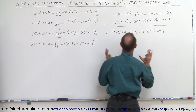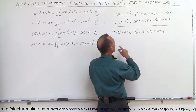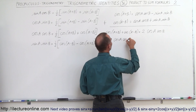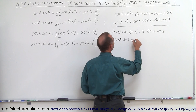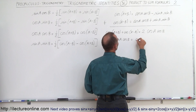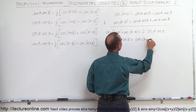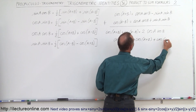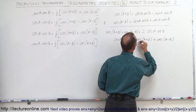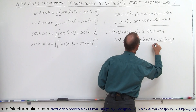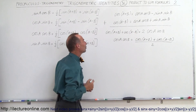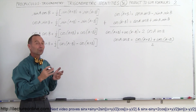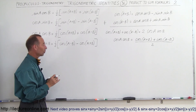If we divide both sides by 2 and turn the equation around, we end up with cosine of A times cosine of B equals cosine of A plus B plus cosine of A minus B, the whole thing divided by 2. That's the third equation, and as you can see it's a fairly straightforward way of deriving these equations.